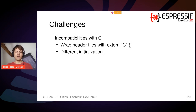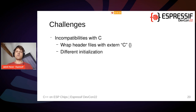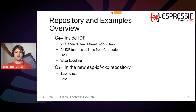Another challenge, which is minor but also plays a role, is that there are some incompatibilities between C and C++. If we have code called from both C and C++, we need to wrap the corresponding header files with extern "C". Another problem is that structure initialization can be different between C and C++, so if you take an IDF example and try to compile it as C++ when it's not an actual C++ example, you will likely need to change the structure initialization, otherwise you will get compile errors.